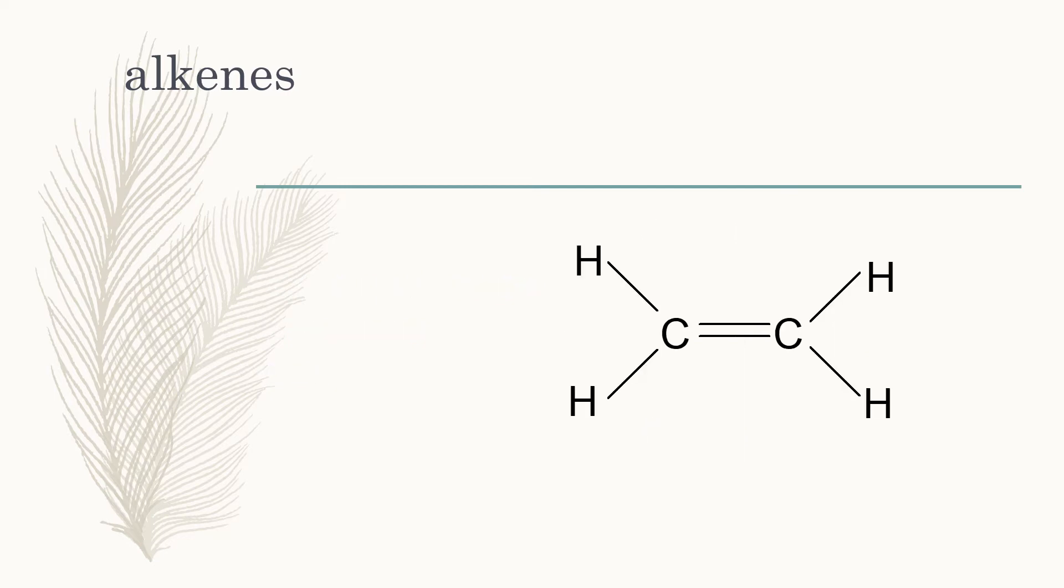Alkenes are similar except they have a carbon-to-carbon double bond, but still just carbon and hydrogen present. We would call this one here ethene because it's got two carbons and then 'ene' because it's a double bond. I guess you can't have a double bonded methane, so methene doesn't exist - strike that.